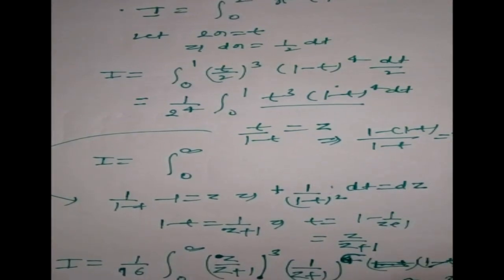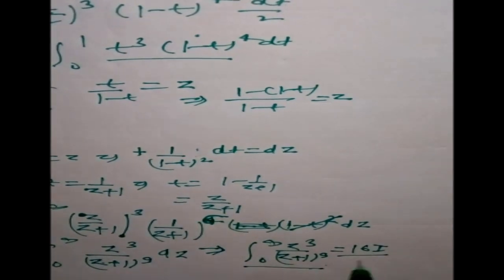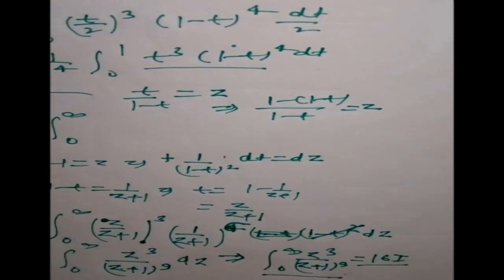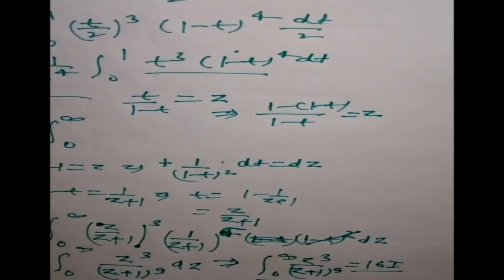From this we can say the integral from 0 to infinity of z³/(z+1)⁹ equals 69 divided by 16 — wait, so the value we are asked for is 69. This is a good question based on the beta function concept.